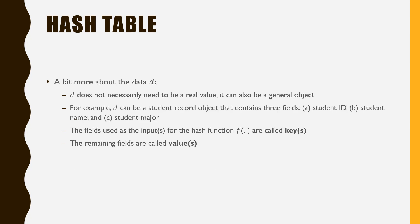Here, the data d is not necessarily a real value — it can also be a general object. For example, it can be a student record object that contains three fields: the student ID, the student's name, and the student's major. We may use only a part of the data fields when calculating the hash value. The expectation is that the combinations of these data fields are all unique. For example, we may only use the student ID here. We call the data fields used to calculate hash values the keys, and those that are not, the values.